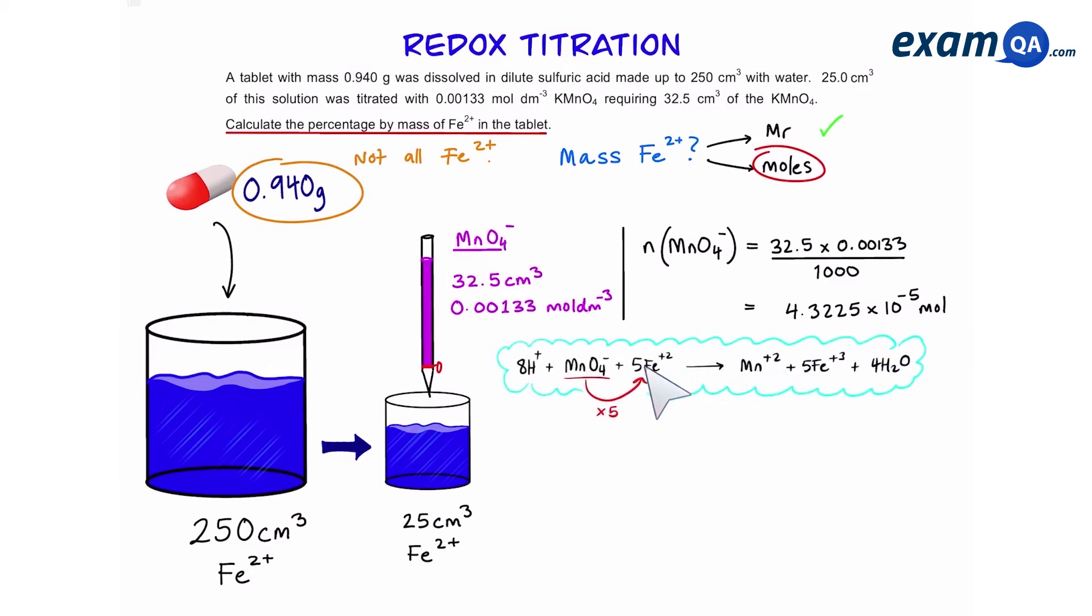Now, once we know the moles of manganate, we can times that by 5. Because of course, we know the ratio of manganate to iron is a 1 to 5 ratio. So, timesing this by 5 gives us 2.1 times 10 to the power of minus 4 moles.